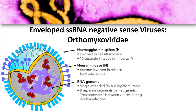This is the basic structure of influenza. You have hemagglutinin spikes involved in cell attachment, and there are 16 separate H types in Influenza A. Neuraminidase is the enzyme involved in release from infected cells — it degrades the inner layer of the cell so the virus can exit. The RNA genome is single-stranded and highly mutable because they have 8 separate segments that permit genetic reassortment between viruses during double infection.